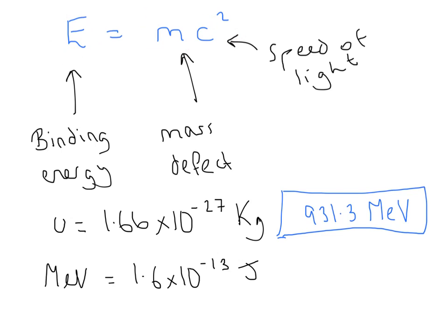So the mass defect is the difference between the mass of the nucleons when they're separate and the mass of the nucleons when they're all combined together. Because when they're combined together, if you measure the mass, it's actually lower than the total of all its separate parts combined. And this difference is caused because of this thing called binding energy.